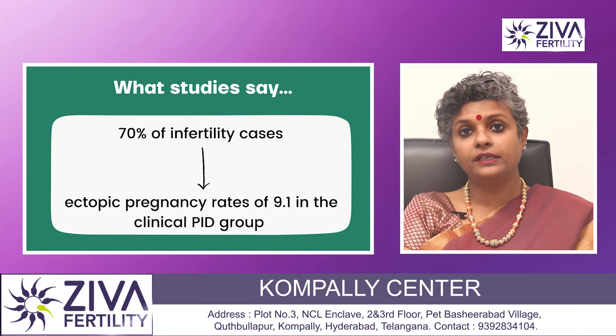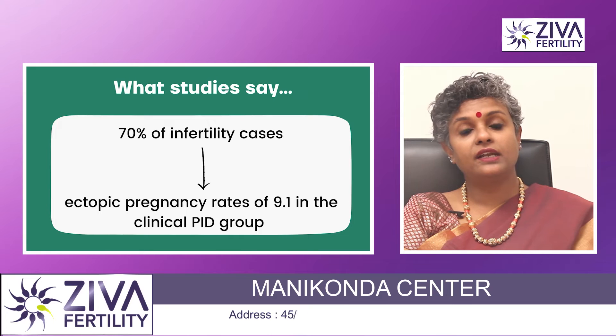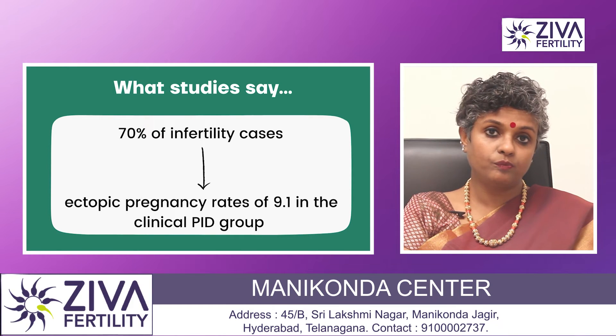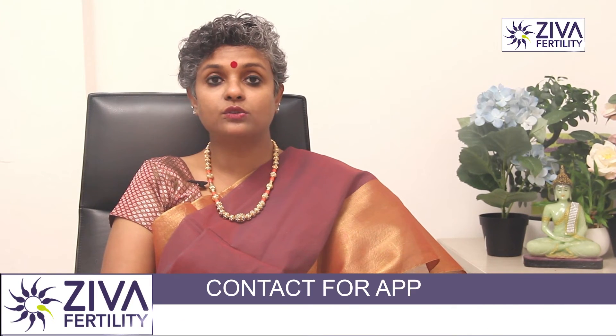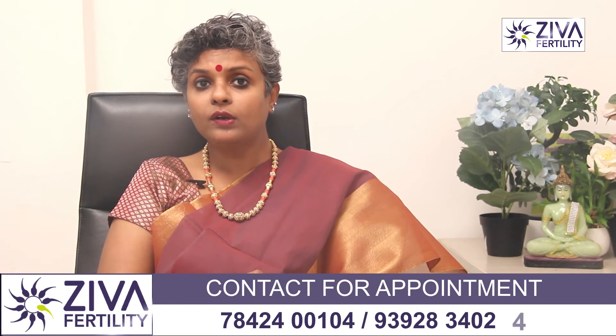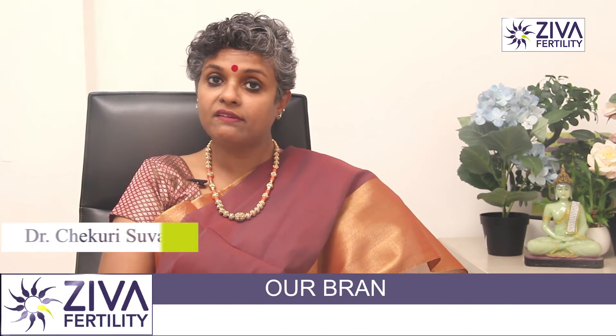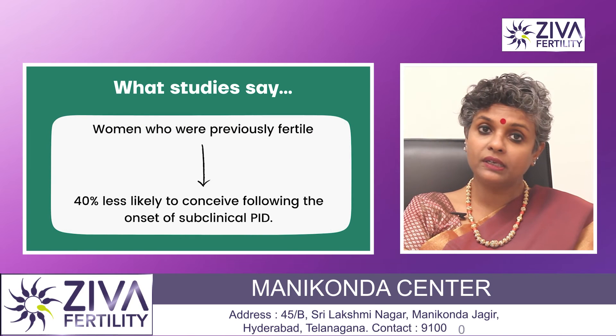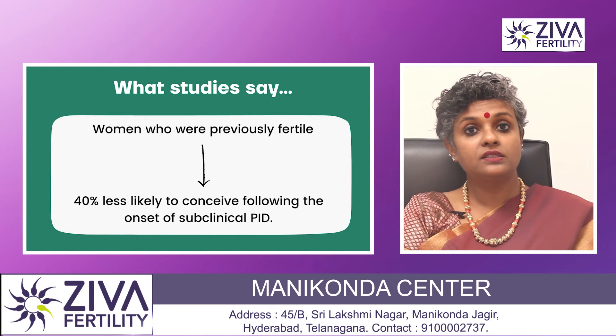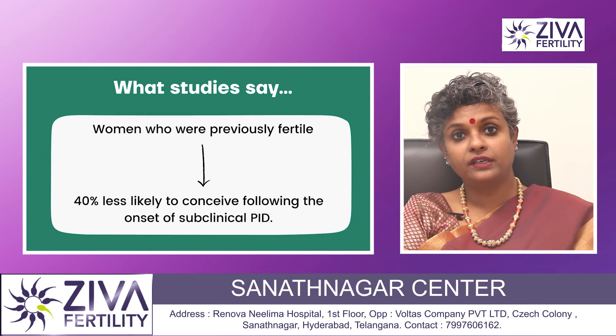Regarding fallopian tube damage, one study found this accounted for about 70% of infertility cases, with ectopic pregnancy rates of 9.1% in the clinical PID group compared to 1.5% in the control group. The same study found 16% of participants with clinical PID were not able to conceive, compared to only 2.7% of the control group. PID can lead to both chronic pain and infertility, and subclinical PID may pose an increased risk to fertility because it often goes undetected until someone presents with unexplained infertility or a blocked tube.